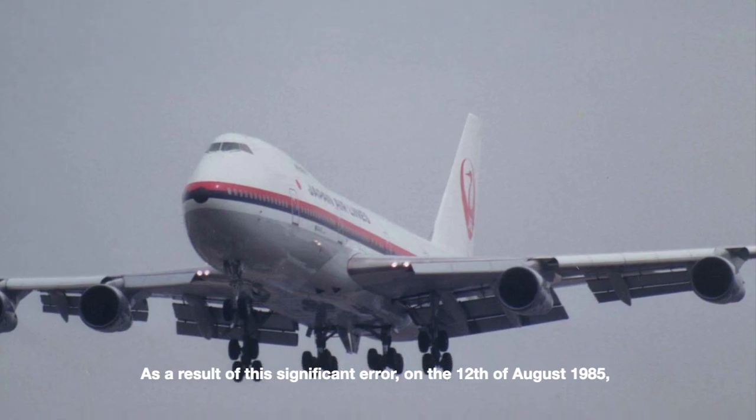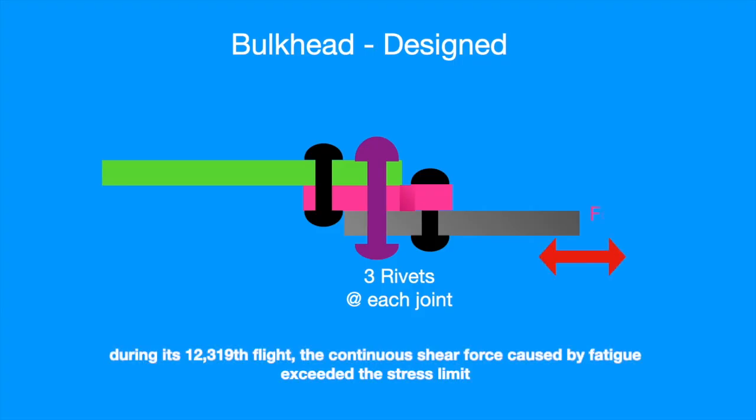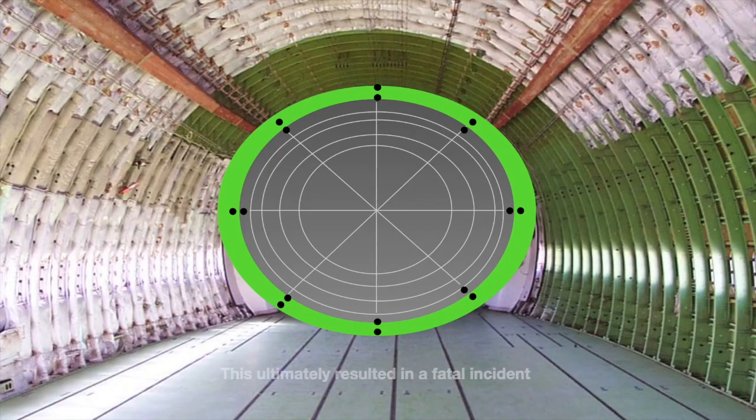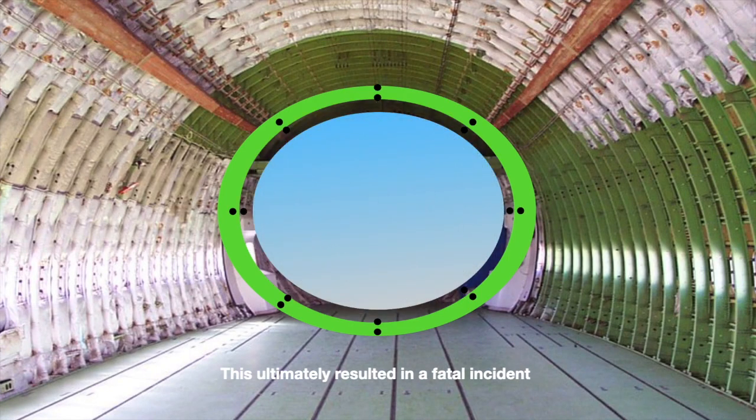As a result of this significant error, on the 12th of August 1985 during its 12,319th flight, the continuous shear force caused by fatigue exceeded the stress limit leading to the failure of the rivets. This ultimately resulted in a fatal incident.